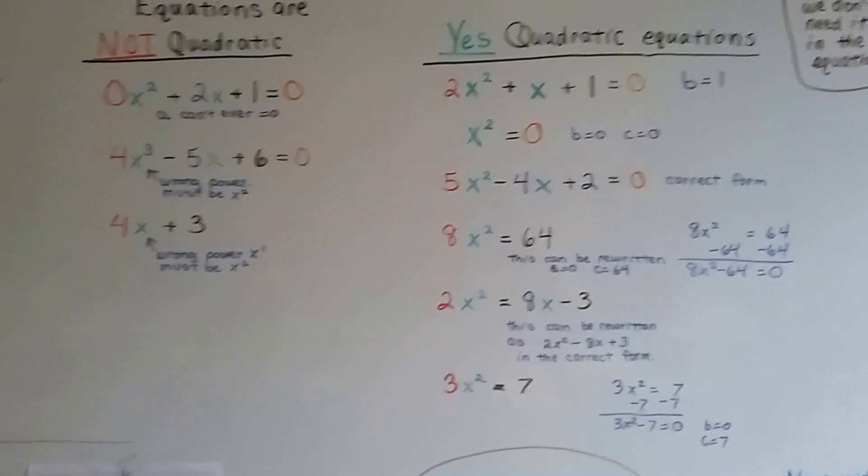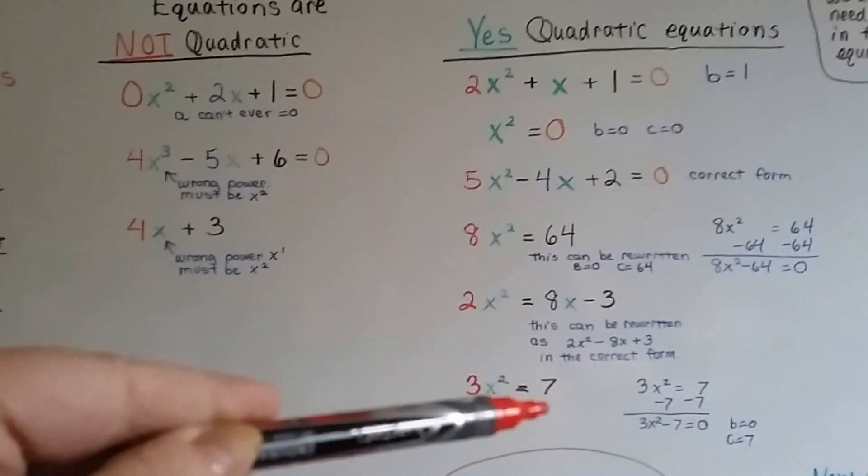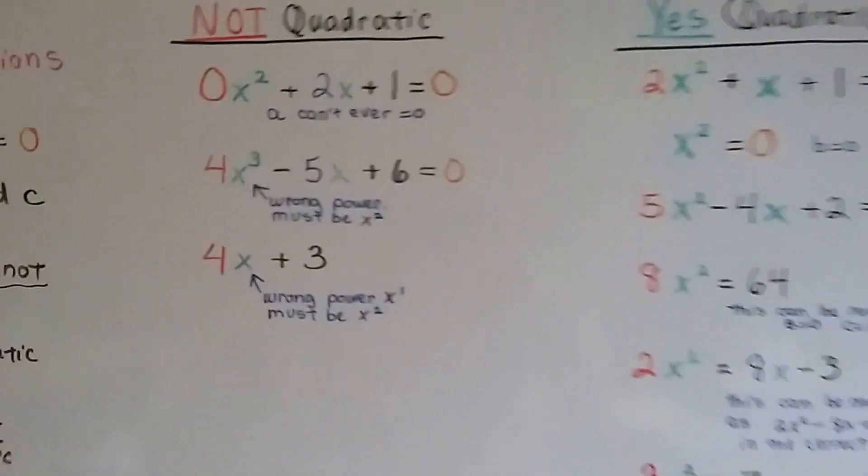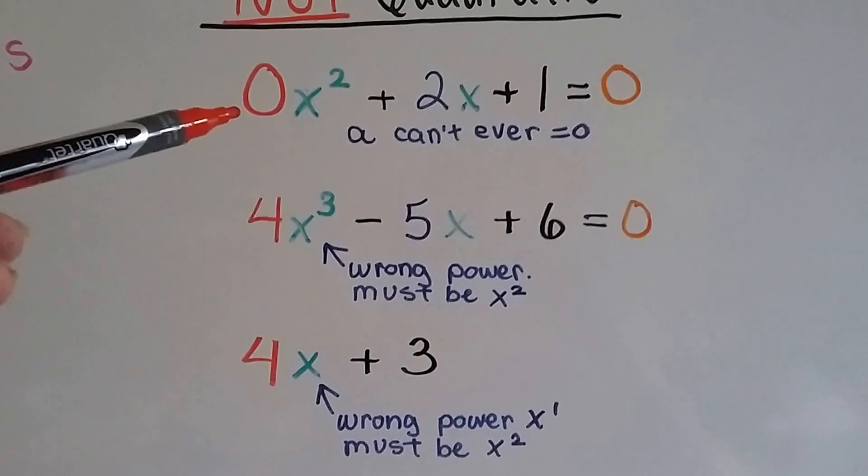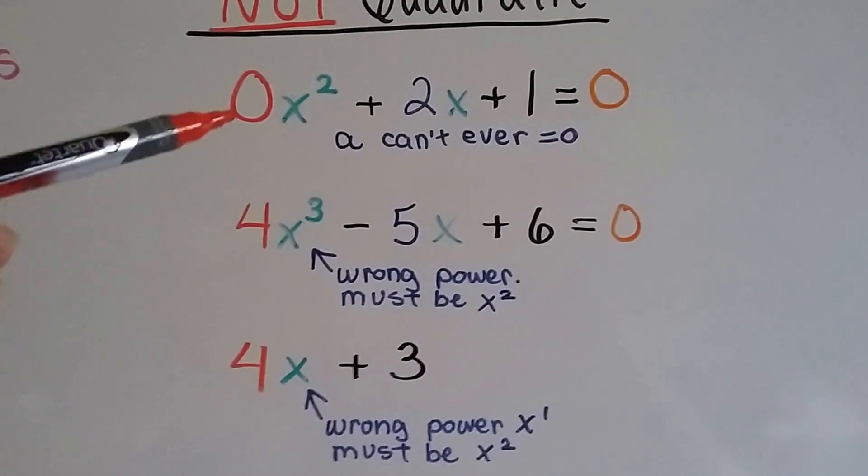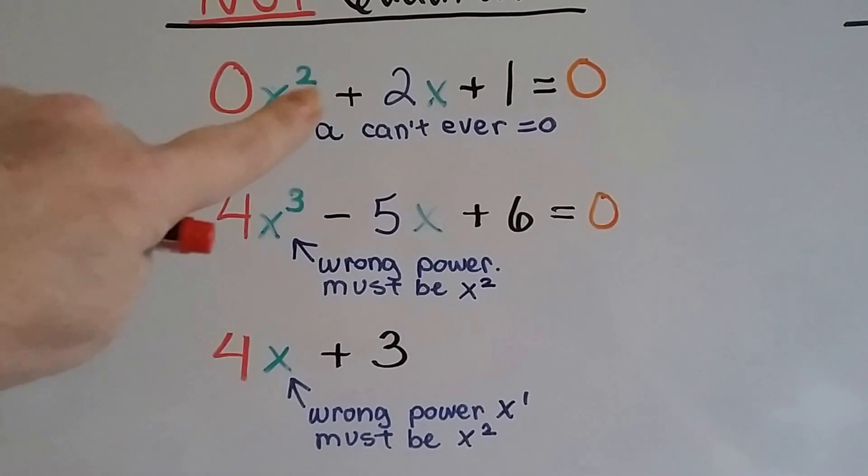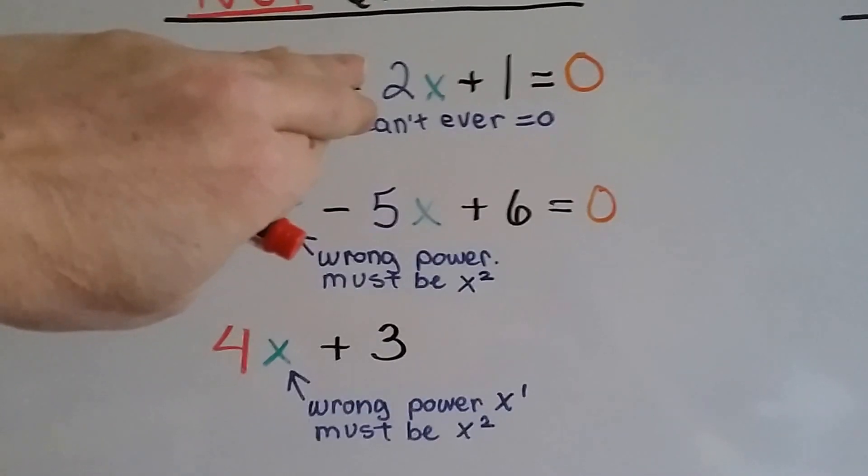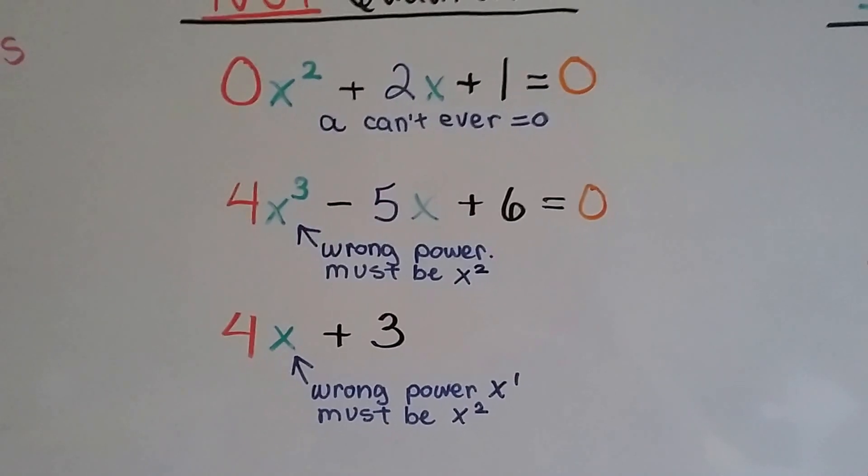So what's the difference between being a quadratic equation and not being a quadratic equation? Let's take a look at our two lists here. These are not quadratics and these are. So let's see what makes them not. First of all, we talked about this one. We've got our a set as zero. Can't do that because that means all we have is 2x plus 1 as an equation because zero times x squared is zero. So we really have this. That's not a quadratic. A can't ever equal zero.